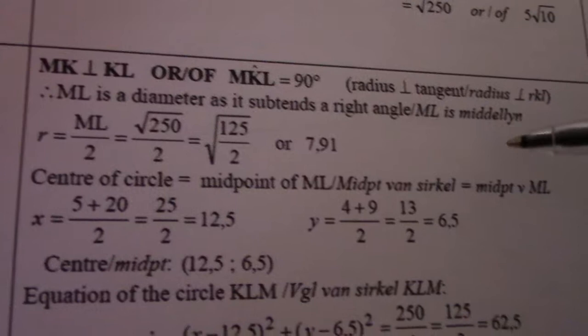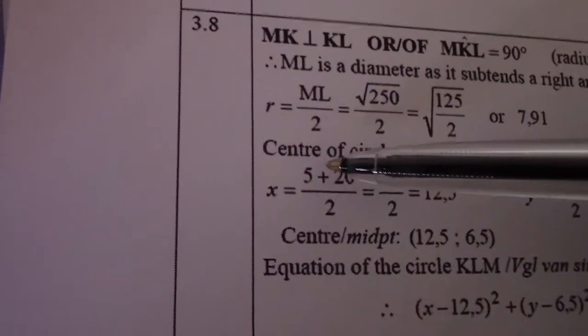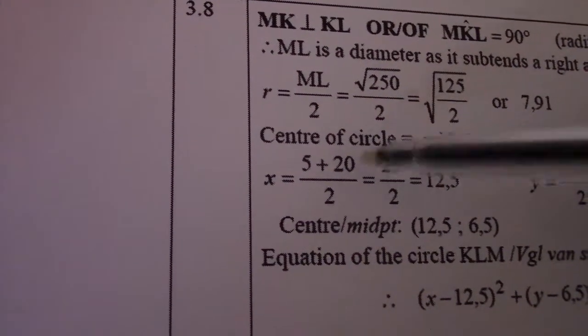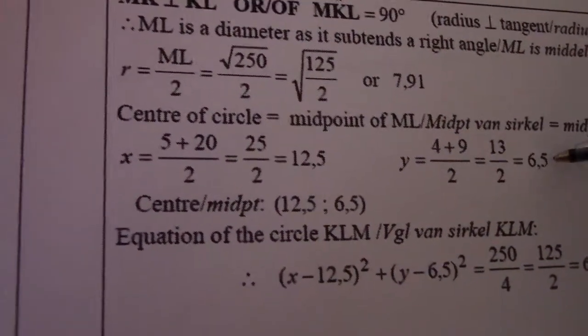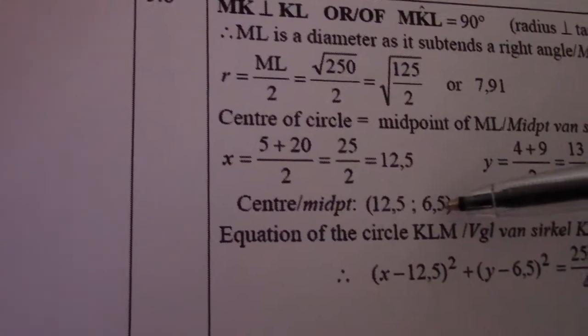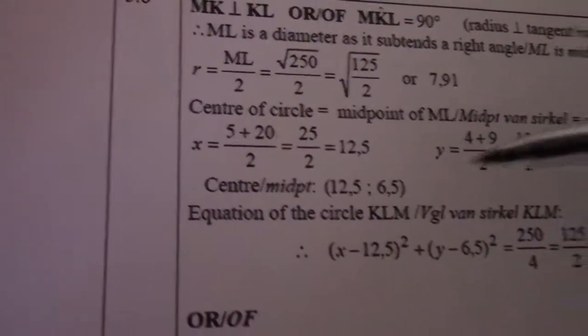At the center of the circle, I find the midpoint of ML. So there, 5 plus 20 by 2 gives me 12.5, and 4 plus 9 by 2 gives me 6.5. So my midpoint is 12.5, 6.5, which is my center.